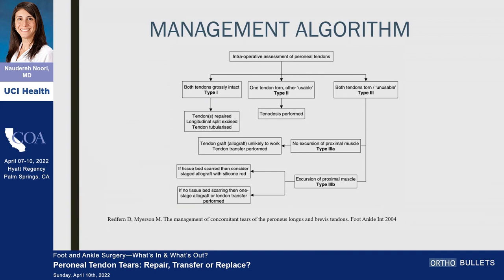The management algorithm proposed by Redford and Meyerson in 2004 is essentially the cornerstone of the literature on perineal tendon tears. It was based on a retrospective review of 28 patients, subdivided by whether tendons were 'intact or usable.' If both tendons are grossly intact — a type one — they propose repairing, excising, and tubularizing, for which they used 3-0 Vicryl.